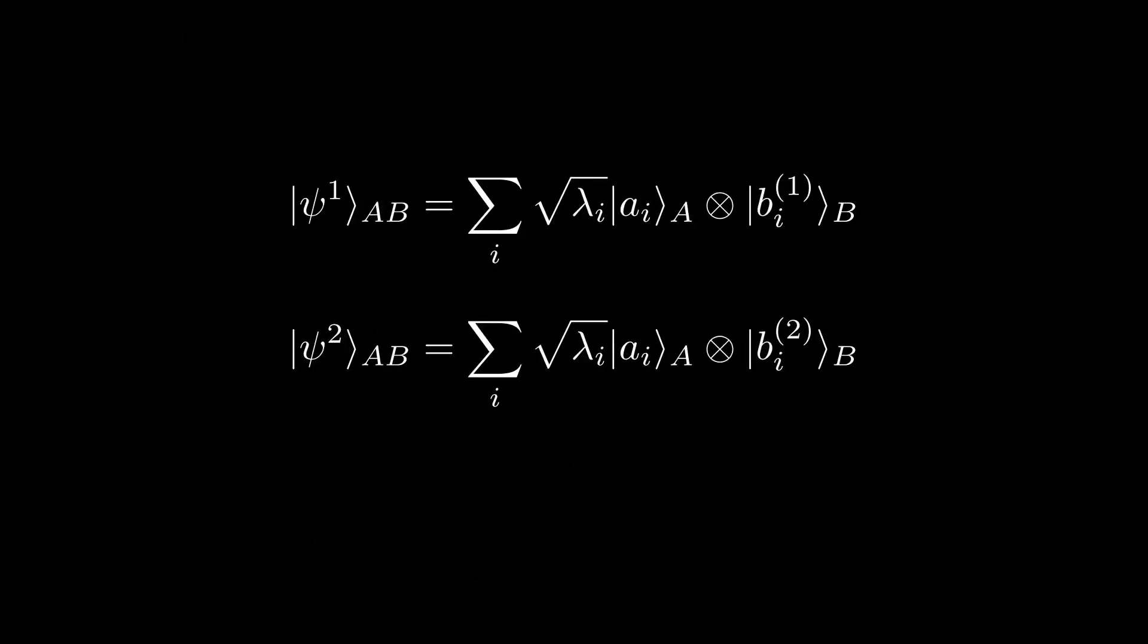Effectively, this means that we can realize all the ensembles of rho A by measuring with respect to different bases for UB. For example, here measuring with respect to alpha I gives the P ensemble, while measuring with respect to UB beta I gives the Q ensemble for psi 1 AB. The proof for this theorem follows trivially from the Schmidt decomposition. In particular, we can write out the Schmidt decomposition as follows for both psi 1 and psi 2, where the AIs are eigenvectors of rho A. Note that since both Bi1 and Bi2 form their own orthonormal bases, we have that there exists a unitary UB that maps between them, trivially proving the HJW theorem.